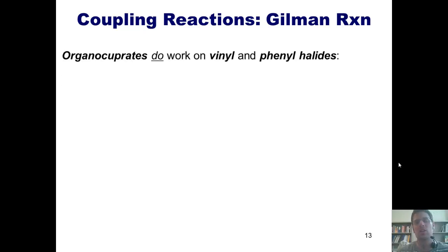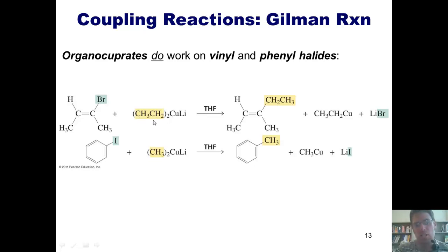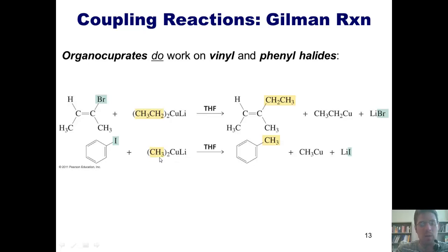Organocuprates do work on vinyl and phenyl halides. For example, if I've got a bromine directly stuck to a carbon-carbon double bond — a vinyl bromide — and I react it with a Gilman reagent where copper is stuck to two ethyl groups, the bromine ends up being replaced by an ethyl group. Here's another example: I've got an iodine stuck to a phenyl ring, and a Gilman reagent with copper stuck to two CH3 groups. In my product, the iodine is completely replaced by one of those CH3 groups. This is how you can take a halogen stuck to an sp2 hybridized carbon — such as a vinyl halide or a phenyl halide — and replace the halogen with an alkyl chain.